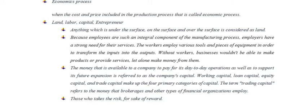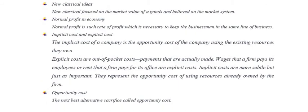From an economist's point of view, wages and salaries are the same concept, but from a business point of view they are different concepts. Normal profit occurs when the difference between a company's total revenue and combined explicit and implicit costs equals zero. Normal profit is the rate of profit necessary to keep the businessman in the same line of business, and it is included in the cost of production. Economic profit being zero means your revenue covers total cost, which includes normal profit.